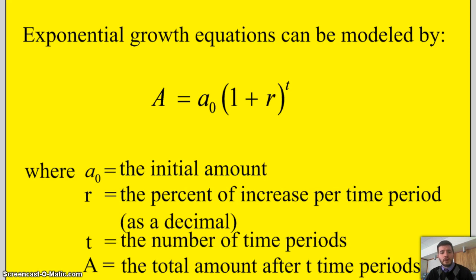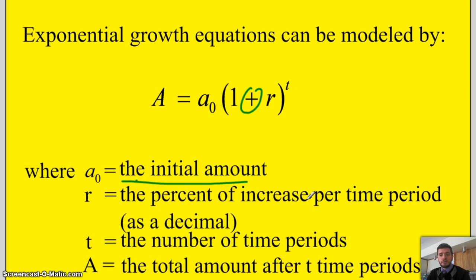So now let's get into the word problems. Exponential growth and decay can be modeled by the same equation. For exponential growth you'll see a plus in the middle. A sub 0 is the initial amount, R is the percent of increase — or for decay, the percent of decrease as a decimal, so 15% would be written as 0.15. T is the number of time periods, and A is the total amount after T time periods.